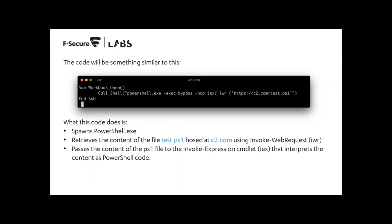This is the basic skeleton of the VBA payload we're going to use. It's quite simple — the relevant part is the second line: 'Call Shell', invoking a function that's calling PowerShell. The main components are IWR — Invoke-WebRequest — which goes to a URL like c2.com/test.ps1, fetches the content, and returns it. The other interesting function is IEX — Invoke-Expression — which takes an input and treats it as PowerShell code. If we combine these two functions, we can retrieve remote content from our server and execute it in memory as PowerShell code.